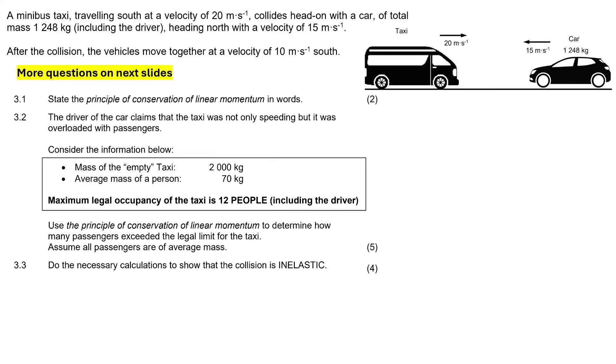So the first question says, state the principle of conservation of linear momentum. Before we get to that, we know that in these kinds of questions, we're often going to use this formula here where you've got M1V1 initial plus M2V2 initial equals M1V1 final plus M2V2 final. We know that formula, right? But what is that formula? Well, what we are saying is that the momentum, remember that's momentum, momentum is MV. So we are saying that the sum of the momentum initial is the same, equals the sum of the momentum afterwards.